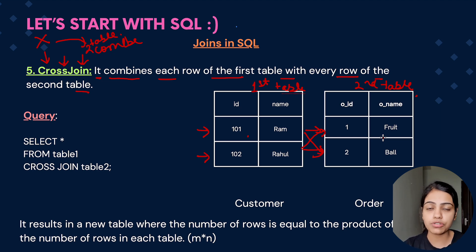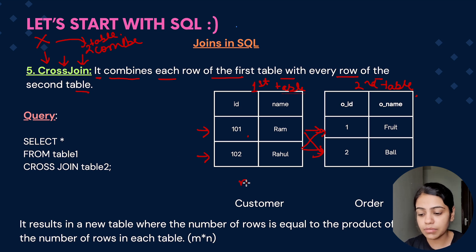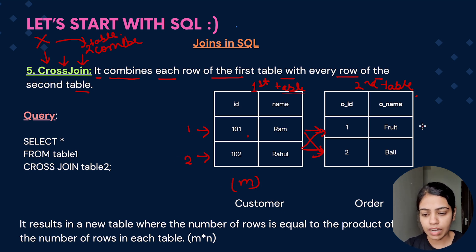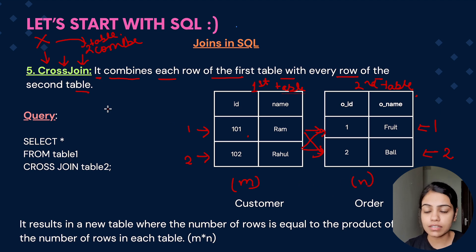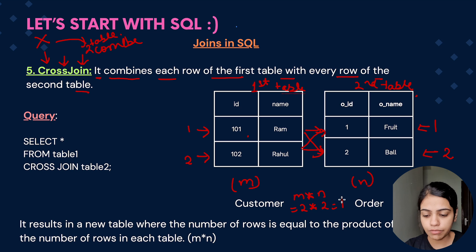Basically there is a cross product which happens between these two tables. Consider that in the customer table there are m rows and in the order table there are n rows. The result of the cross join is m × n — for this particular table it would be 2 × 2, that is 4 rows.